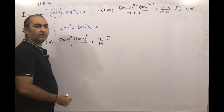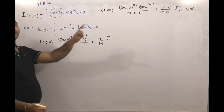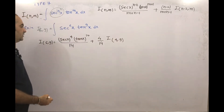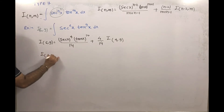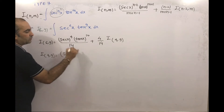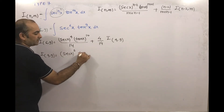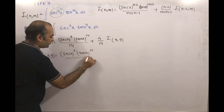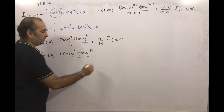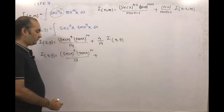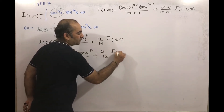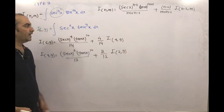Then I(4, 9) will come — if I put n value 6, what will come is I(4, 9). So here what will come: sec x to the power 2 into tan x to the power 10, divided by 9 plus 4 that is 13, minus 1 that is 12, will come.